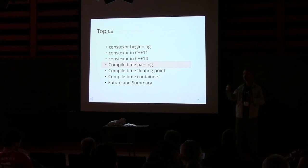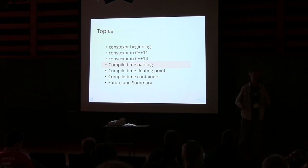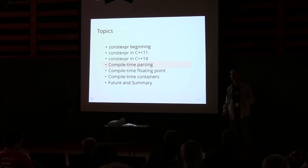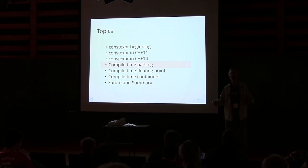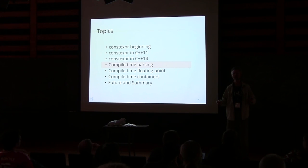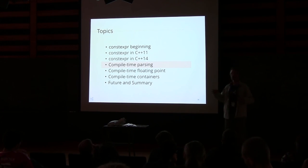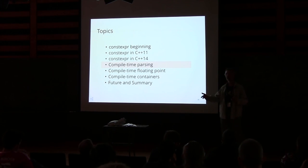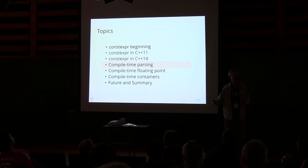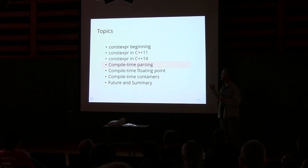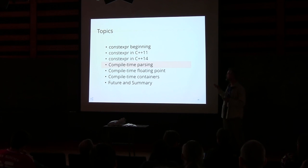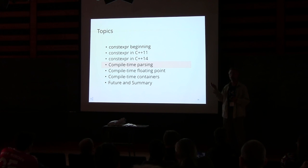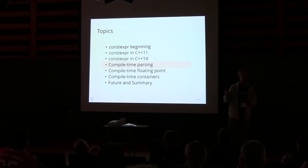When I started talking to my friends and associates about my excitement about constexpr, I'd say you can compute a square root at compile time, and they'd say, that's cool, but why would I want to do that? Really the rest of this talk is why I think there's some real value here. We're going to look at parsing, floating point computations, and compile-time containers.